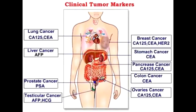What are tumor markers? A tumor marker is a substance found in blood, urine, or body tissues that can be elevated in cancer, among other tissue types. There are many different tumor markers, each indicative of a particular disease process, and they can be used in oncology to help detect the presence of cancers.